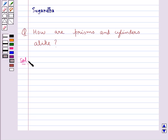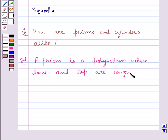First let's see what a prism is. A prism is a polyhedron whose base and top are congruent polygons and whose lateral faces are parallelograms in shape.